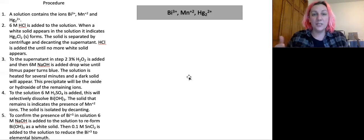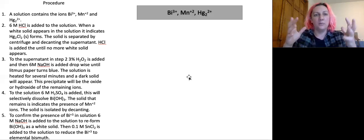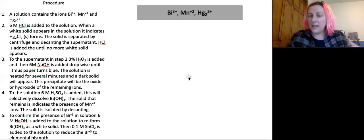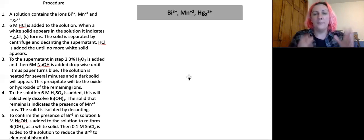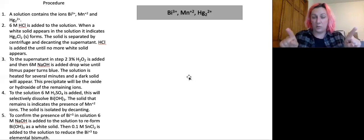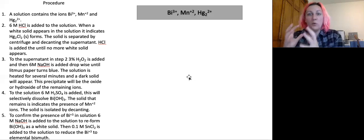And so the procedure tells me to centrifuge and decant to separate this and add more hydrochloric acid to see if more solid appears, and then do that process again. The idea being we pull out all of that mercury from solution, and then we take the supernatant, which is the liquid that remains when we separate the solid and the liquid of the heterogeneous solution. And that supernatant is going to then contain only manganese and bismuth.